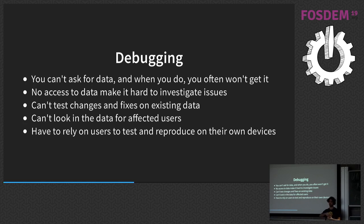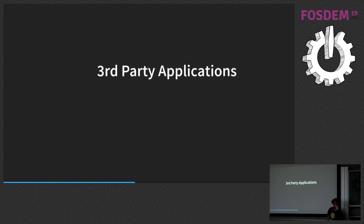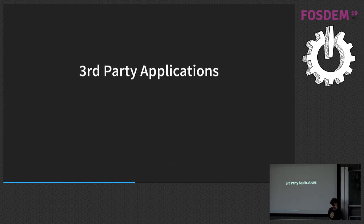You also can't test changes on existing data. If you think you've fixed something, you can't run it against the real data — you have to give it to the user and get feedback. This is really hard when the user isn't technical: they give incomplete information, they don't know what you're expecting, they say 'it crashed' when it actually just showed an error message. And you cannot look into data for affected users — you can't identify who is affected and ask them to upgrade.